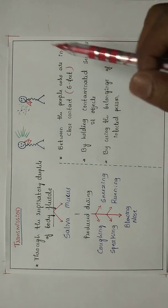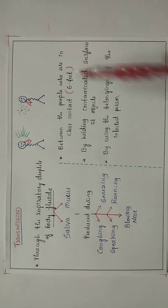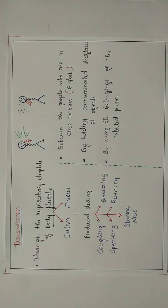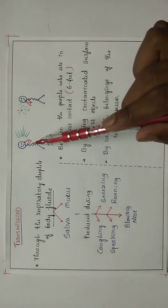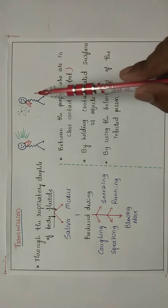The transmission may be between the people who are in close contact, that's about six feet, or by holding the contaminated surfaces or objects like chair or in hospitals, walls, any of the objects which are contaminated by the infected person may be transmitted to the healthy person, or it may be transmitted by using the belongings of the infected person like towel, mobile phones, and handkerchiefs.